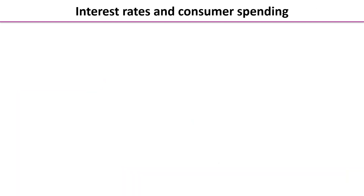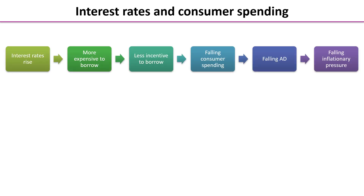First, we're going to consider the impact of interest rate changes on consumer spending, looking at a rise in interest rates. A rise in interest rates makes it more expensive for consumers to borrow — to perhaps pay for sofas, TVs, or new cars. So there's less incentive to borrow, which will reduce consumption as part of aggregate demand, shifting the aggregate demand curve to the left and reducing inflationary pressure.